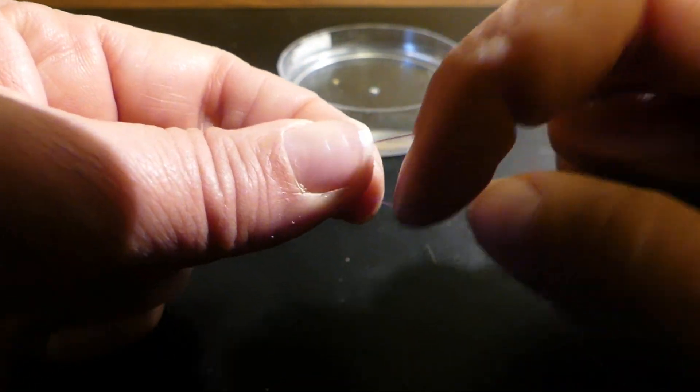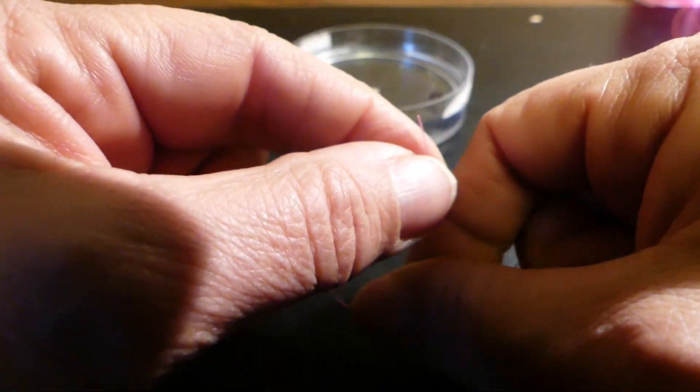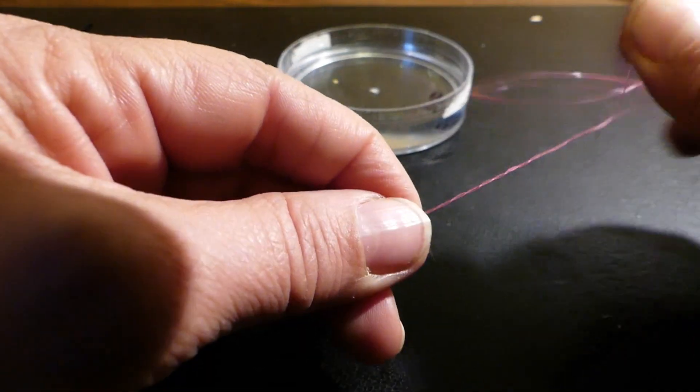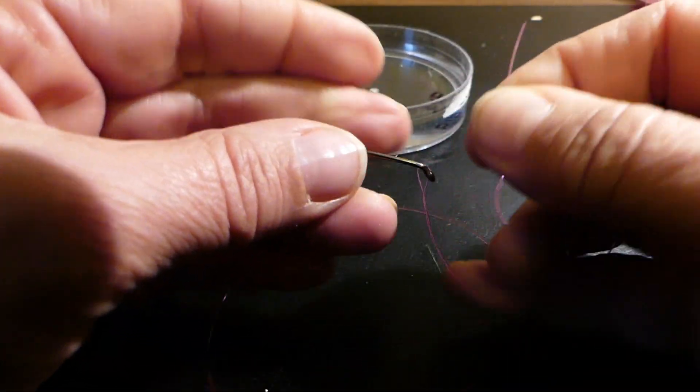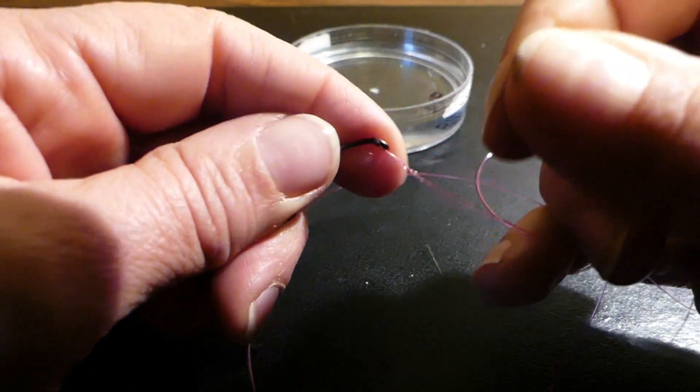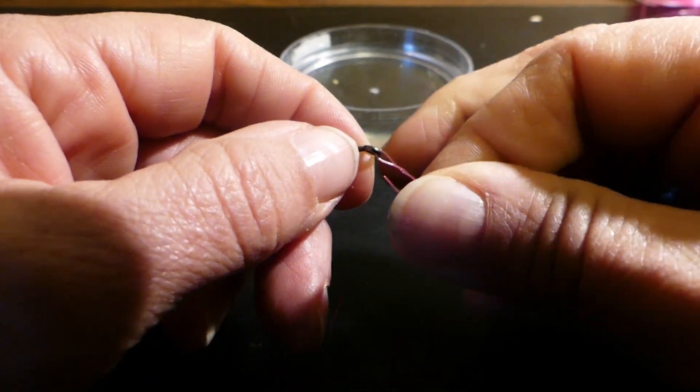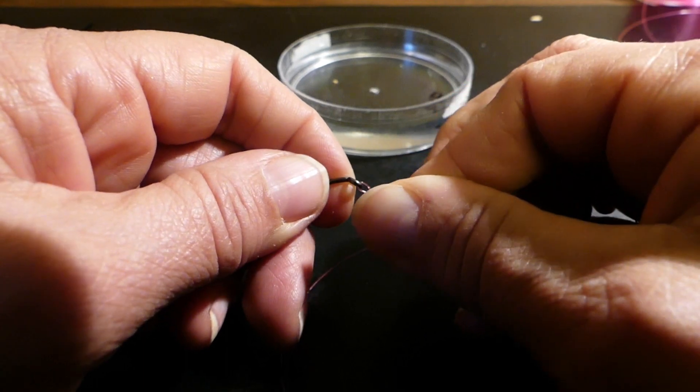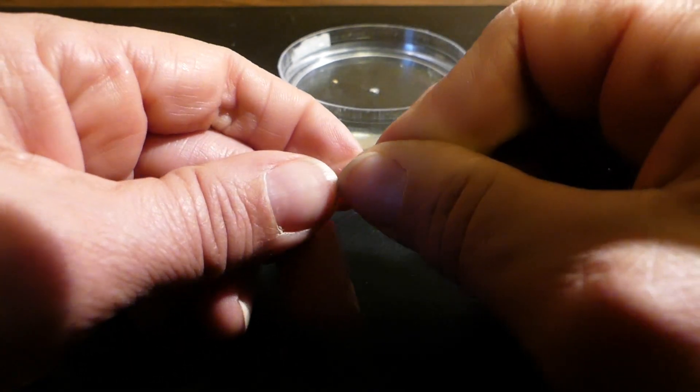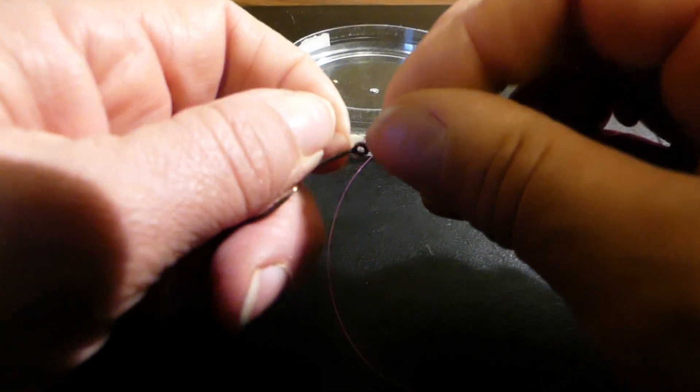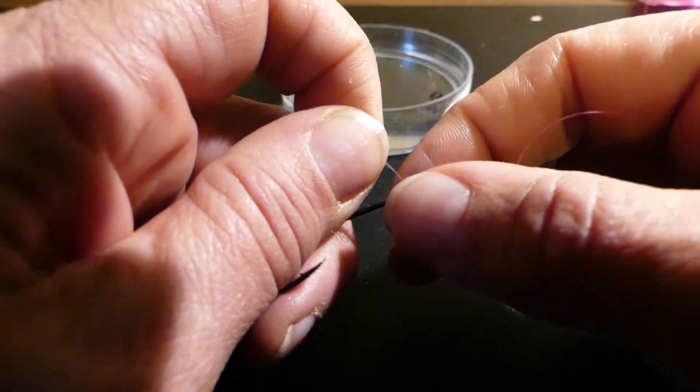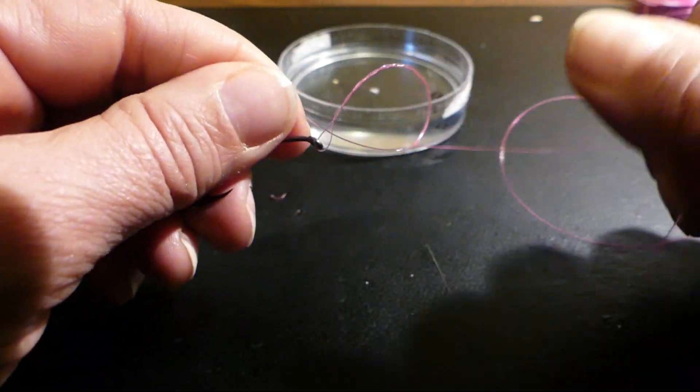Grab hold of the tag end again so you can see what we're doing. If you look down here where the eye of the hook is, you'll see where it's looped, that open loop there. This is where you're going to pass the tag end through the open loop. So you have something that looks like that. Just give yourself a bit to hang on to.